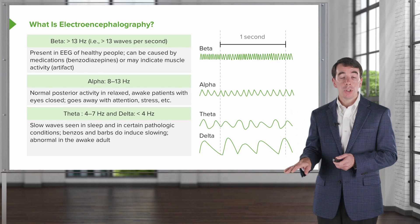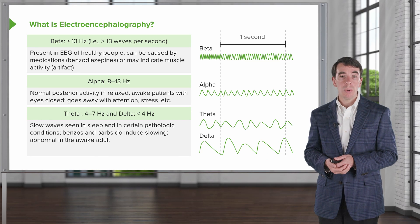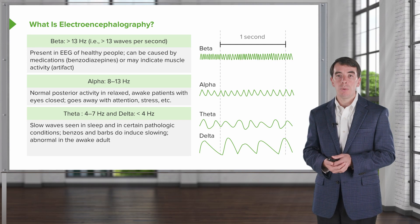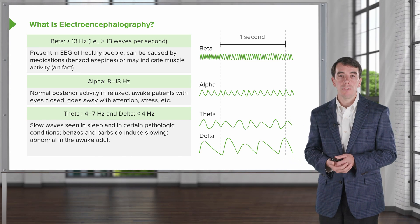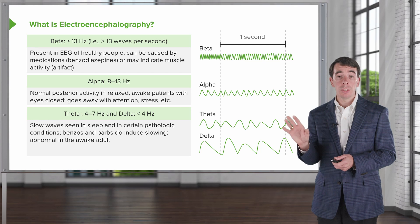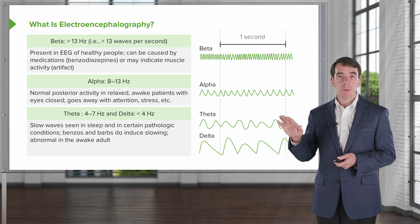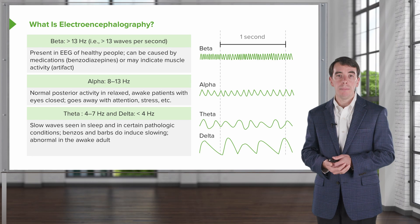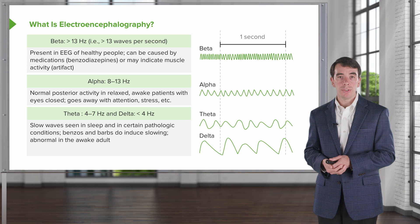As the brain calms and quiets, we see even slower activity. Theta and delta frequency are slower waves. Theta is about 4 to 7 hertz, and delta is less than 4 hertz in frequency. These slow waves are seen in sleep and are normal in slow wave sleep — meaning the brain is calm and turned down. They also appear in pathologic conditions, such as patients who are medicated and sedated on benzodiazepines or barbiturates, or have another cause of coma or encephalopathy.